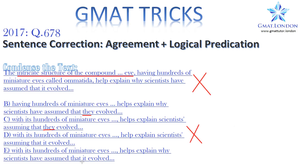Now what are they talking about — what evolved? It's the intricate structure of the compound eye that evolved. If you say 'they evolved,' you're making a logical error. You're saying the scientists evolved, as if the scientists evolved. So you've got to check that the sentence actually makes sense. Even though 'scientists' is plural and 'they' is plural, it doesn't make sense to say the scientists evolved. You're talking about the eye — the intricate structure of the compound eye.